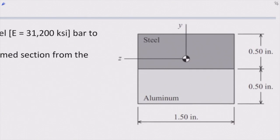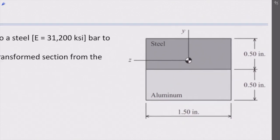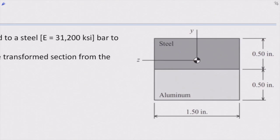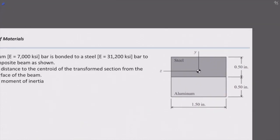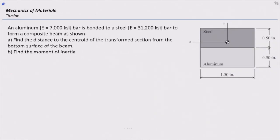Two materials are connected together. Each has a height of 1.5 inches and thickness of 1.5 inches. The top material is steel with a modulus of elasticity of 31,200 ksi. The bottom material is aluminum with a modulus of elasticity of 7,000 ksi.